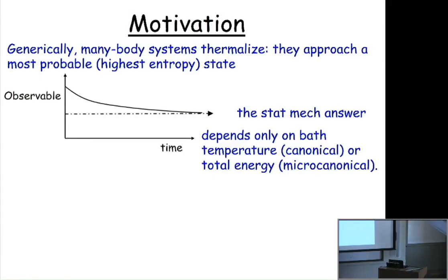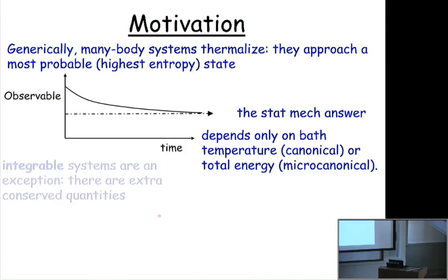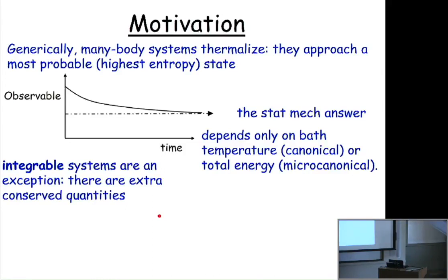The motivation for this work is that if you have a many-body isolated system, it appears generically that it looks thermal — it approaches a highest entropy state with a micro-canonical distribution. Some observable, over some time, approaches the answer you get from statistical mechanics, and if it's isolated, it only depends on the total energy. But if you have an integrable system, those are exceptions, because there are many extra conserved quantities. Those extra conserved quantities mean you can't generically go to the statistical mechanical answer; you typically have to use a generalized Gibbs ensemble for the final distribution.